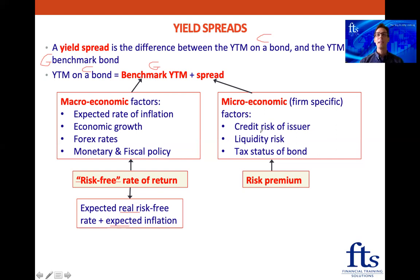The micro or firm-specific factors determine the spread of the corporate bond over the government bond. We need to look at things like the credit risk of the issuer, the liquidity risk of the issuer and the bond, and the tax status of the bond. The higher these risks are, the higher the risk premium needs to be to compensate investors for that extra risk, and the higher the spread over the government bond. These risks are in order of importance — credit risk is the most important, then liquidity risk, and tax status is still one thing we have to consider.